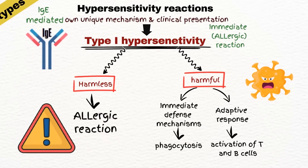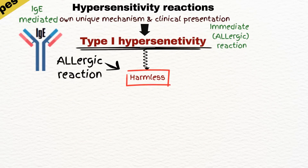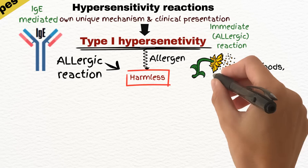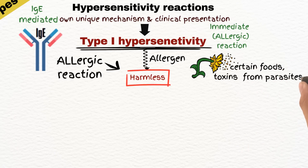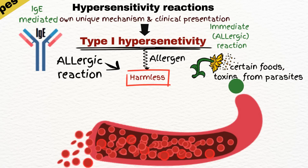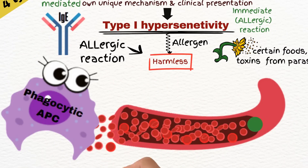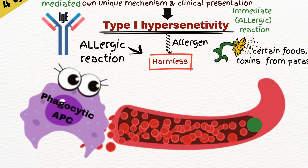This process begins with the initial exposure to the harmless material, known as an allergen. In type 1 hypersensitivity, we talk about allergens commonly recognized by immunoglobulin E antibodies, like pollen, certain foods, or toxins released from parasites. These allergens commonly dissolve in the blood and penetrate tissues. When they enter the body, they are picked up by antigen-presenting cells, primarily dendritic cells.